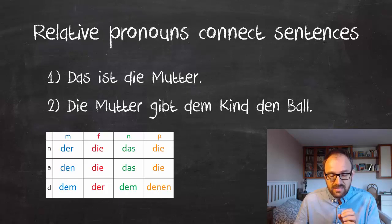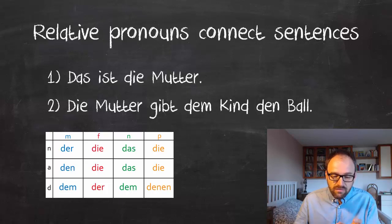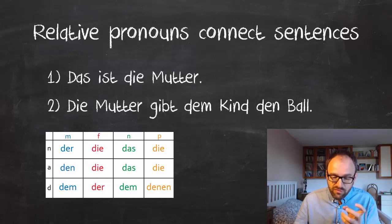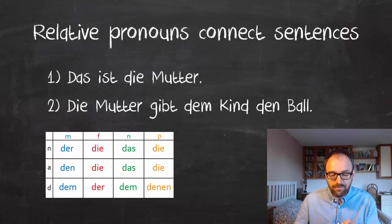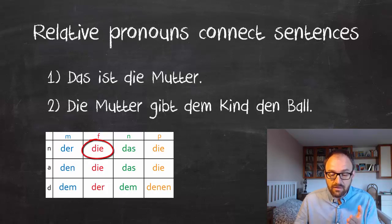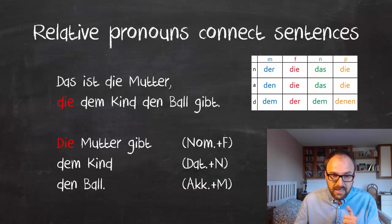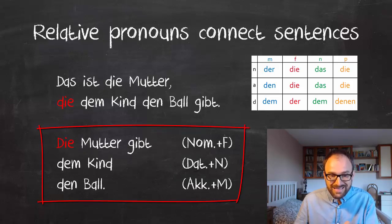We're moving to the second stage and we add a sentence: 'Das ist die Mutter' — that's the mother. We want to connect these two sentences using a relative pronoun: that's the mother who gives the ball to the child. The relative pronoun matches the gender of the noun it refers to — in this case, the mother, so it's feminine. And it has its own case depending on the context: what does the mother do? She gives the ball to the child. So: 'Das ist die Mutter, die dem Kind den Ball gibt.'